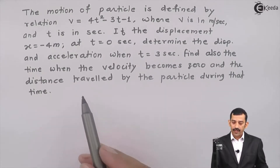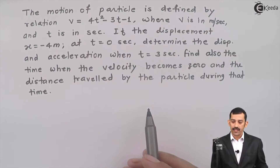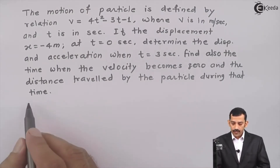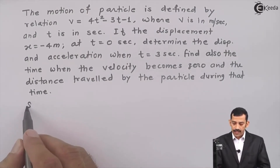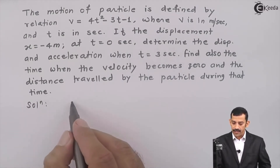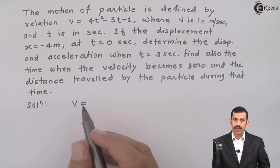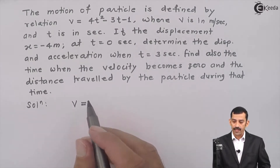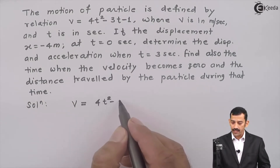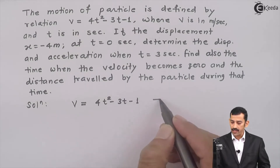In this problem, the equation of velocity is important, where v is a function of time t. We will write this equation of velocity, which is a function of time t, given as v equal to 4t squared minus 3t minus 1. Say this is equation number 1.